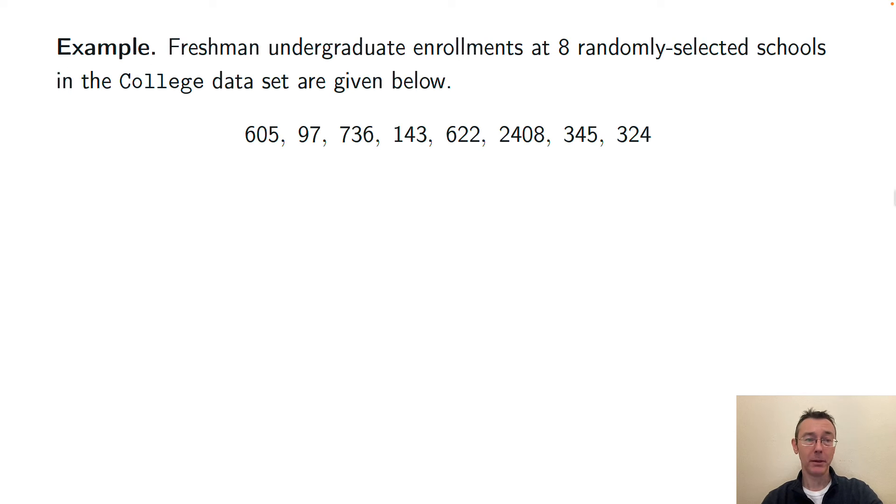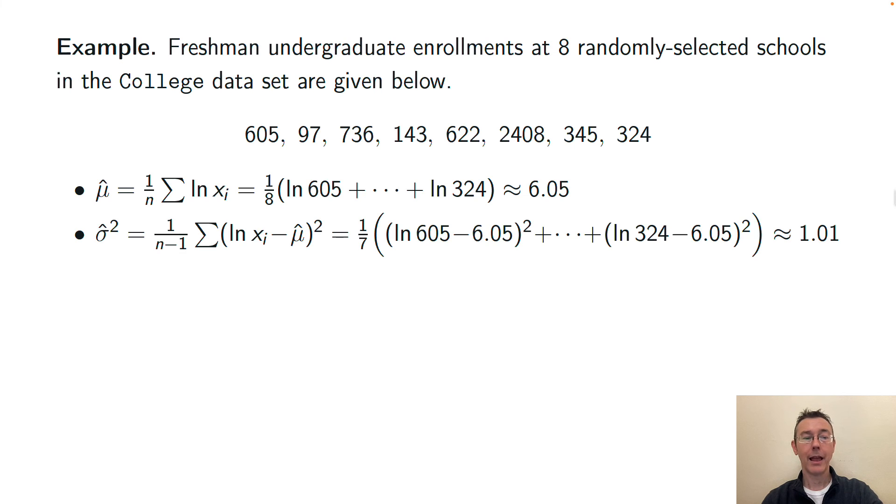Let's wrap up with a quick example of that. I'm looking at the College data set again from the ISLR2 package. This time I'm going to look at the Enroll variable, freshman undergraduate enrollments, and I'm looking at a sample of size 8 from that set. Here are the freshman undergraduate enrollments at those schools. And you can see they're all positive. The smallest is about 97, the largest is about 2408. So even just in this small sample you can really see that the data differs by several orders of magnitude. Here are the computations for μ̂ and σ̂². I've used the unbiased estimator. And my estimator for the population mean for the logarithm of that variable is 6.05. My estimator for the variance of the logarithm of that variable is 1.01.